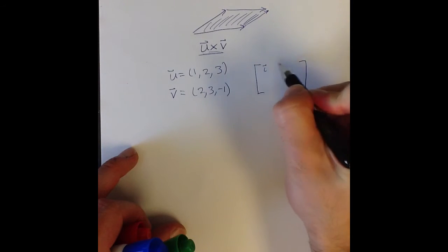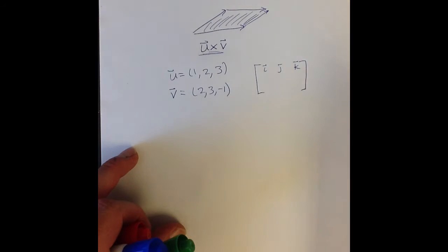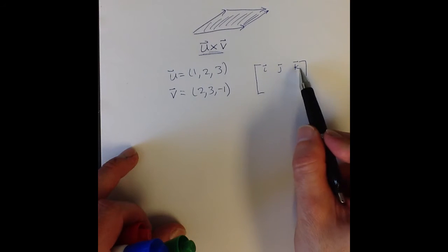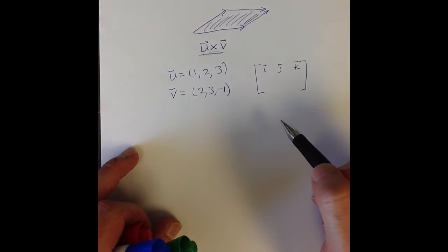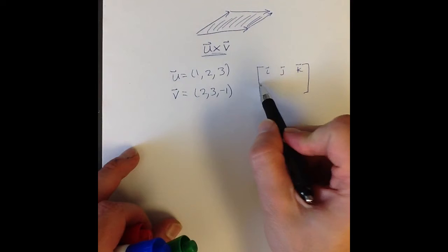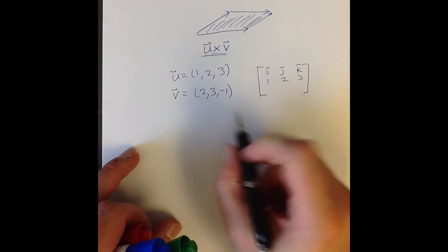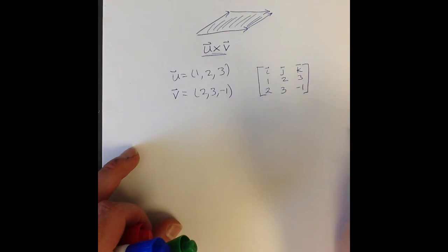The first row will always be i, j, and k. These are the unit vectors that point in the direction of the axes in three dimensions: i = (1,0,0), j = (0,1,0), and k = (0,0,1). Then we put the components of our first vector in the second row: 1, 2, 3. And the components of the second vector in the third row: 2, 3, and -1.